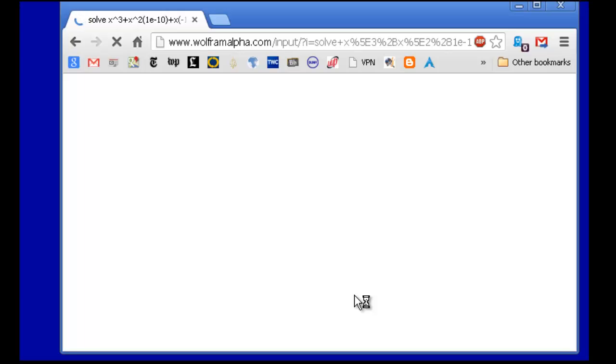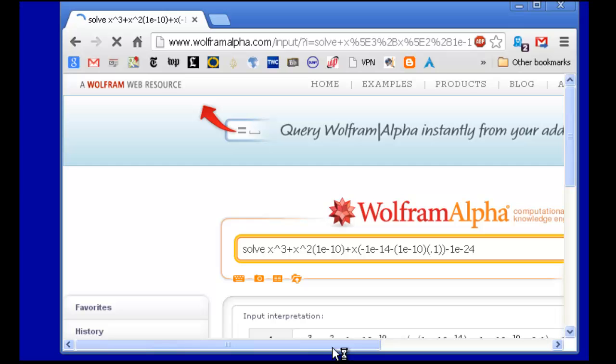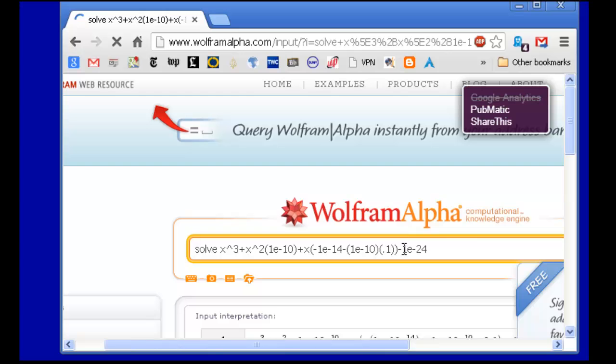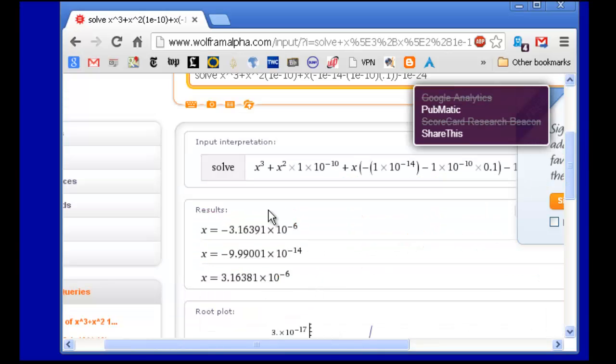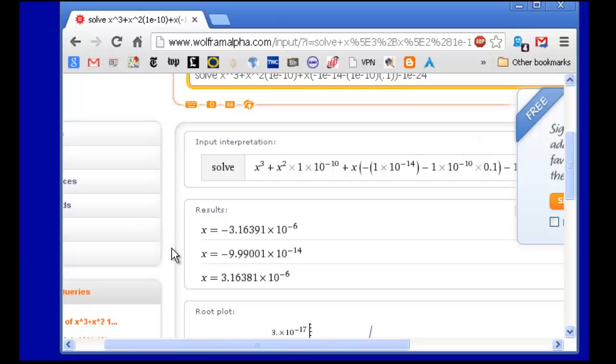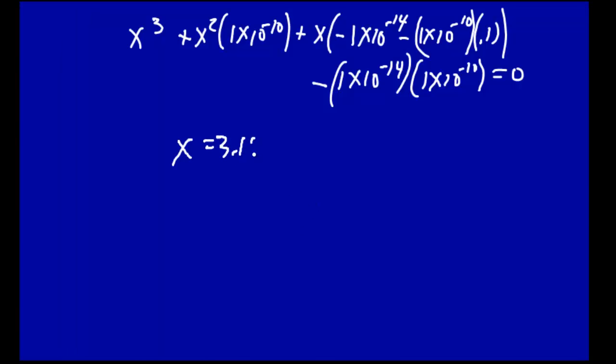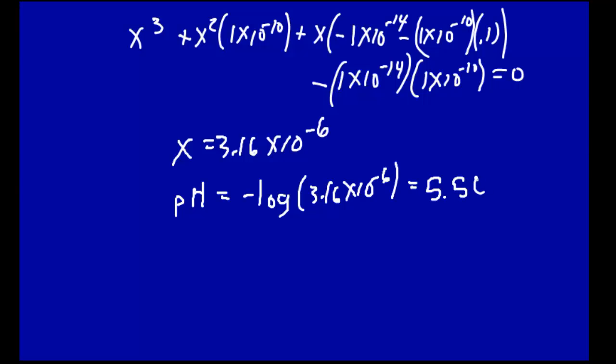Chugs along for a minute. And okay, so there it is. We solve this equation. What do we get? x. Well, we've got a bunch of values of x. As we might expect, it's a cubic equation. So we get three values of x. This one is not reasonable, it's negative. This one's not reasonable, it's negative. Oh, look at this. This is reasonable. It's positive and so on. So it looks like x, the solution, the reasonable solution to this equation is 3.16 × 10⁻⁶. So x = 3.16 × 10⁻⁶. And pH is then minus log of that. And that is equal to 5.50. There we go.